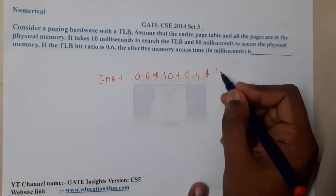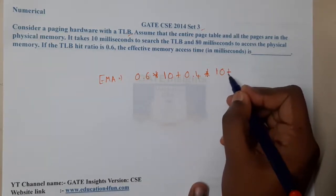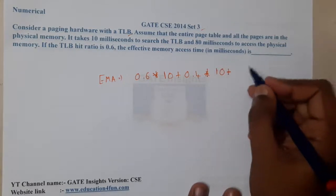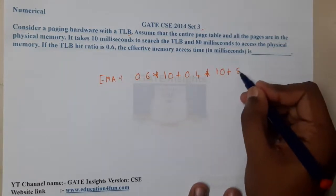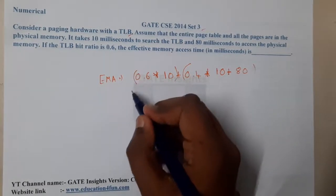If it is a miss, how much time will it take? We are indirectly wasting 10 seconds here and we are going to perform this in memory, so 2 times memory access, that is 80 milliseconds will also be added here. So this will be the first part and this will be the other part.